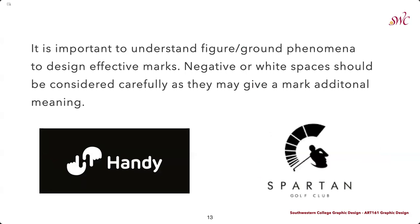It's also important to think about the figure-ground phenomenon to design effective logos. This is a useful tool to create negative or white space that can be considered carefully to give the mark additional meaning. On the left, the logo for the company Handy shows two hands, and within the negative space of the index finger and thumb, you start to see an H being represented. On the right, a clever logo for Spartan Golf Club uses positive and negative space brilliantly — you may first see a golfer swinging a club, or you may see a Spartan face with a helmet on top, achieved through the figure-ground relationship.